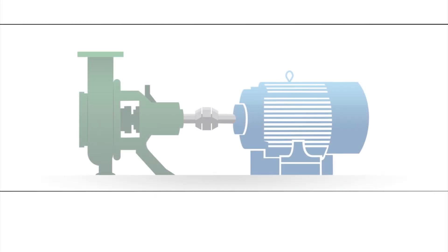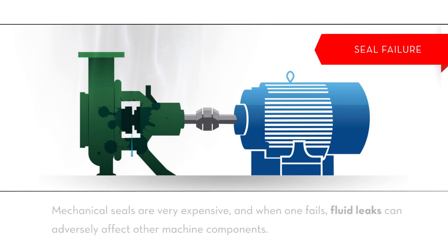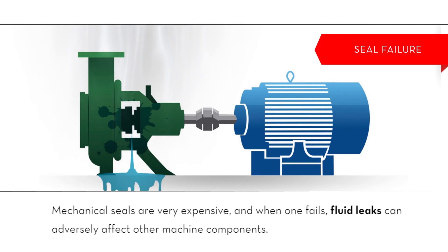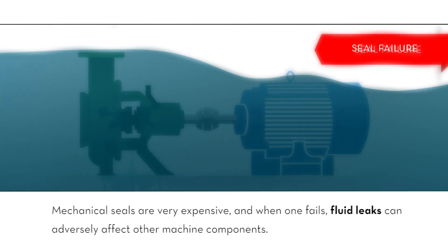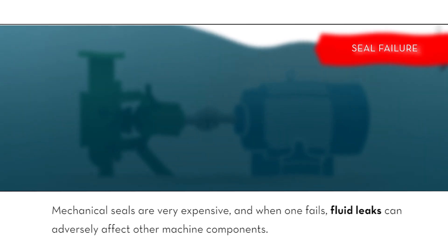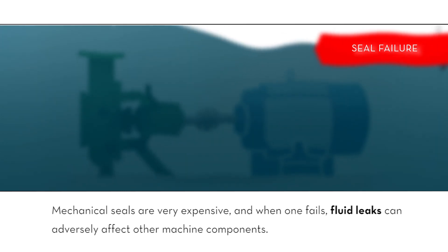Number one: seal failure. Mechanical seals are very expensive and when one fails, fluid leaks can adversely affect other machine components.